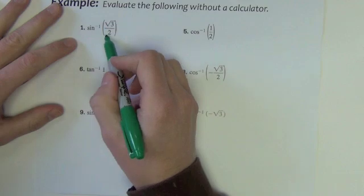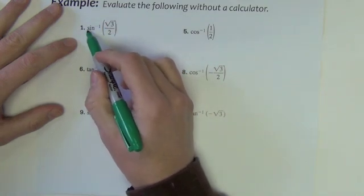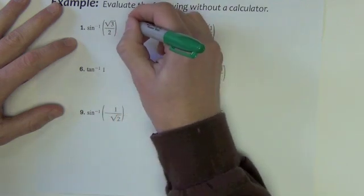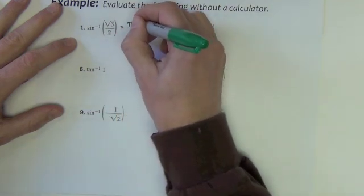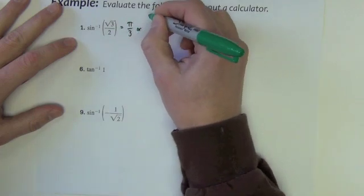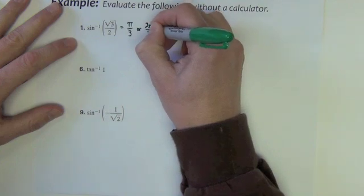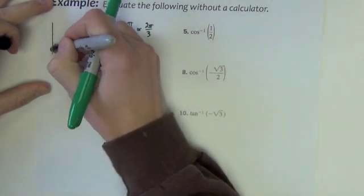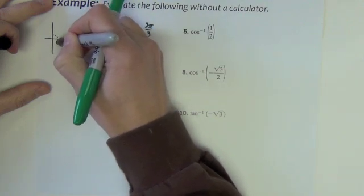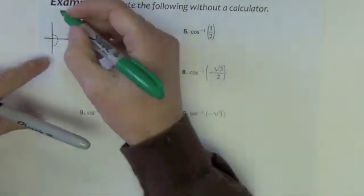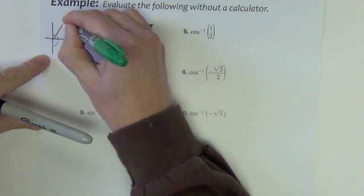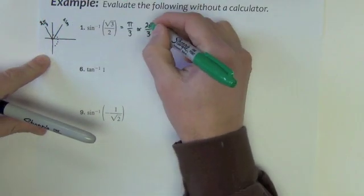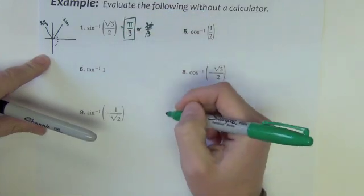This one says sine inverse of square root of 3 over 2. Sine is the y value, so I'm thinking: at what angles do I have y values of square root of 3 over 2? Those angles would be pi over 3 or 2 pi over 3. Now for inverse sine, we only want this side of the graph. Pi over 3 is here; 2 pi over 3 is out here. So the 2 pi over 3 gets thrown out, and the answer is just pi over 3.